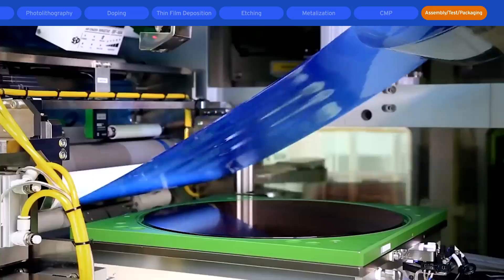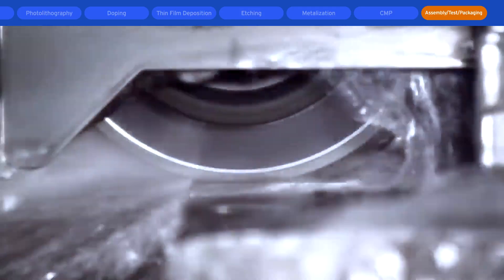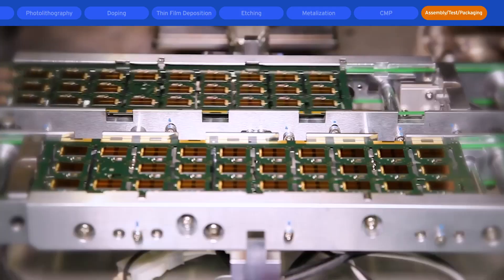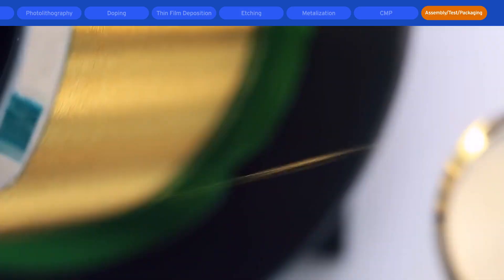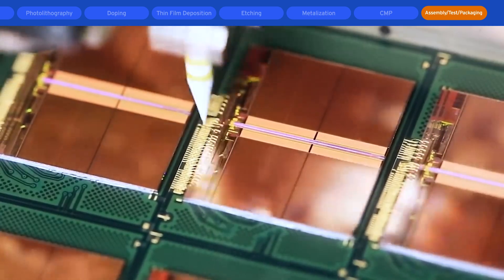The wafer is then thinned by polishing the backside and then tape is applied to the back of the wafer to hold the die in place during sawing. Wire bonds or solder spheres are added to the singulated die to facilitate electrical connection.